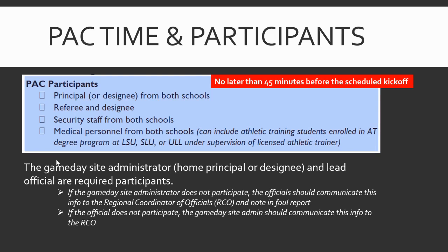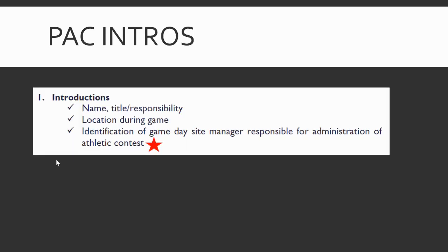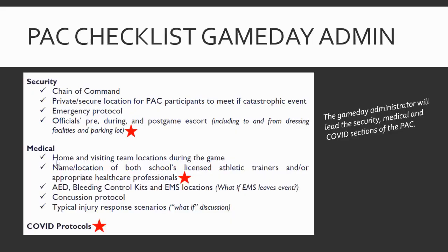Part 1 of the PAC checklist involves introductions: name, title, location during the game. Critically, we identify the game day site manager responsible for administration of the athletic contest. Once introductions are finished, the referee should ask the game day site manager and his or her team to review the security, medical, and COVID sections of the PAC checklist. Much of the discussion led by the game day administrator will focus on content in the venue-specific emergency action plan.